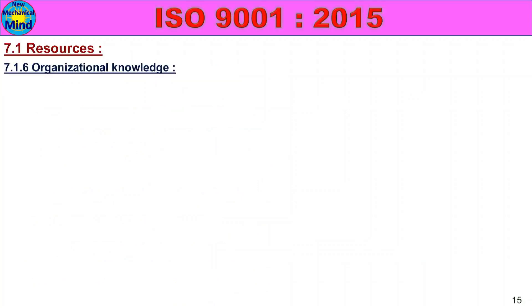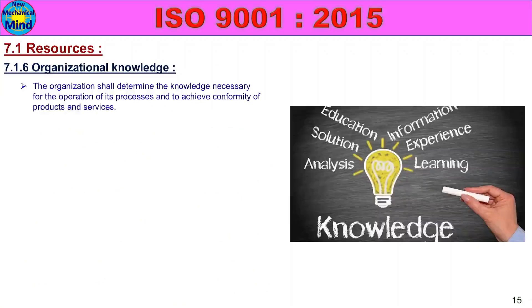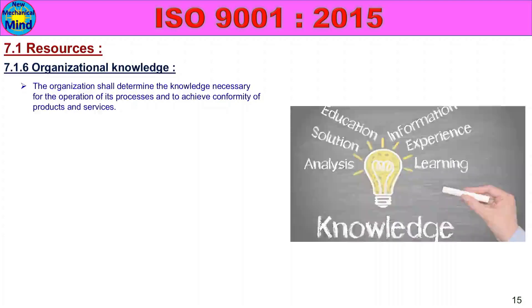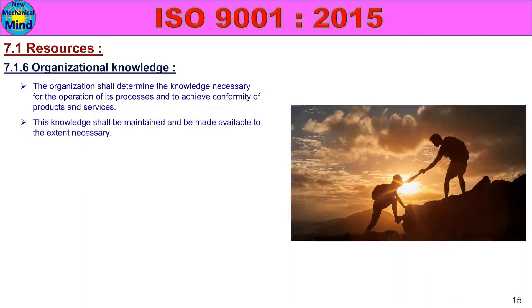7.1.6 Organizational Knowledge: The organization shall determine the knowledge necessary for the operation of its processes and to achieve conformity of products and services, and shall maintain this knowledge to the extent necessary.